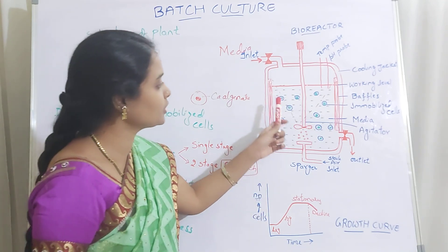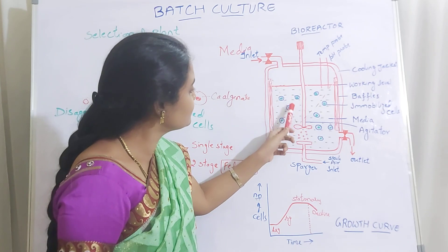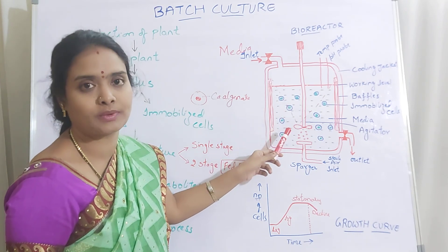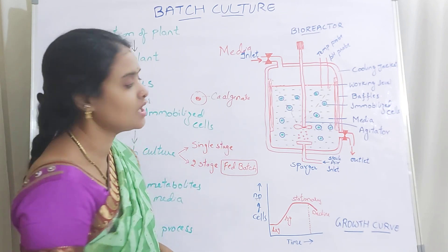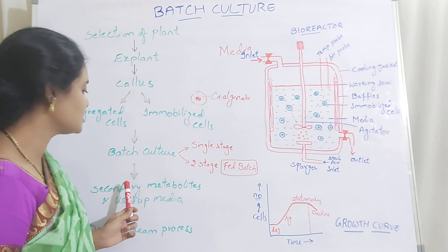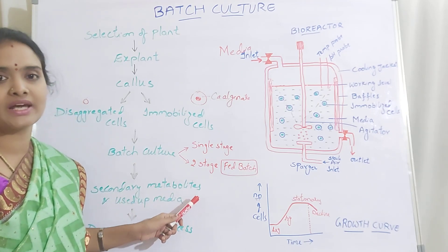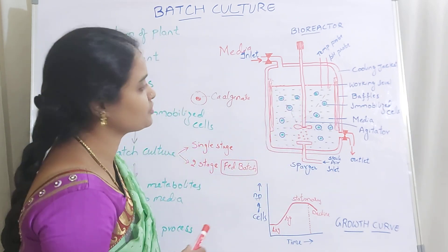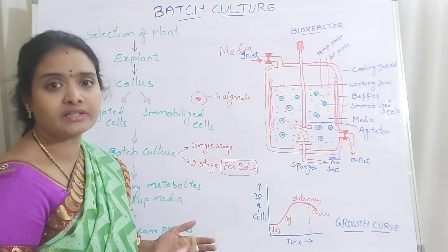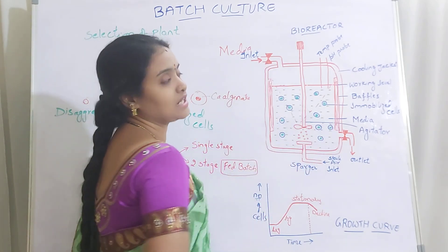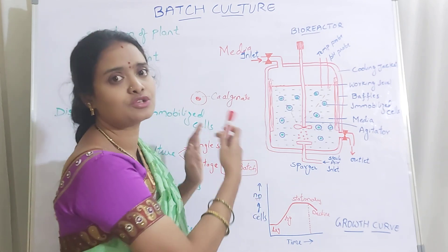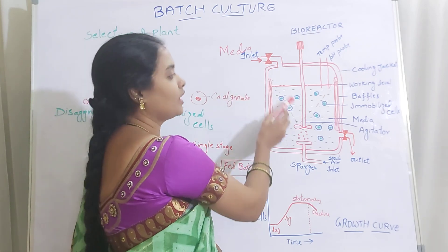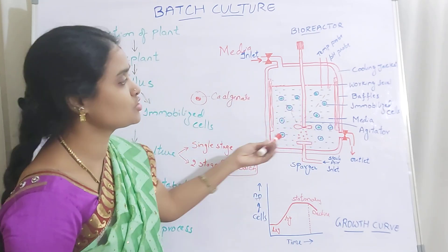Secondary metabolites will be produced at the stationary phase. At this stage, there will be certain probes to detect the level or amount of secondary metabolites produced. Once it is done, the process is stopped and everything is collected from the outlet — the secondary metabolites, used-up media, and the immobilized cells. After that, the bioreactor is emptied and goes for steam sterilization, as it is a huge vessel that cannot be sterilized by other means. Then a fresh batch of culture is started — fresh media will be added and the immobilized cells can be reused and added again.